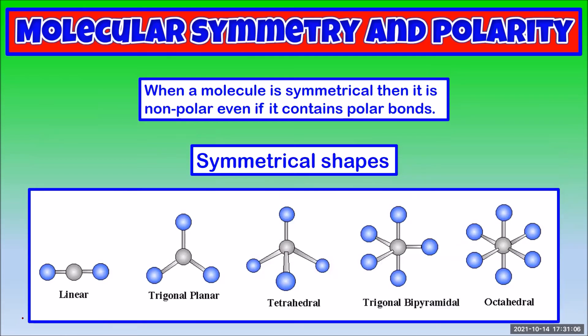When a molecule is symmetrical, then it is nonpolar, even if it contains polar bonds. These are the symmetrical shapes: the triatomic linear, trigonal planar, tetrahedral, trigonal bipyramid, and octahedral.